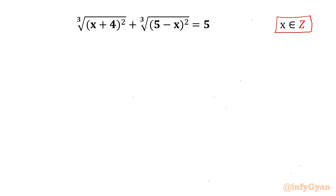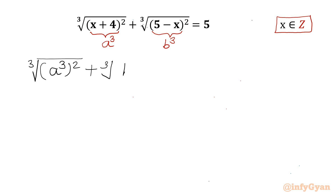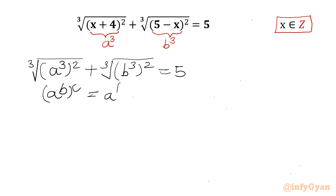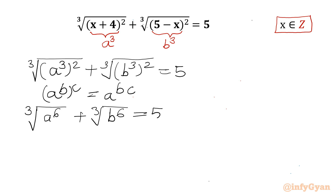Let's get started with our substitution straight away. I will consider the bracket (x+4) equal to a cube, and the bracket (5-x) equal to b cube. So I can write our equation as cube root of a cube whole squared plus cube root of b cube whole squared equal to 5. Using property of exponents, this simplifies to a squared plus b squared equal to 5. And this equation I will call equation 1.